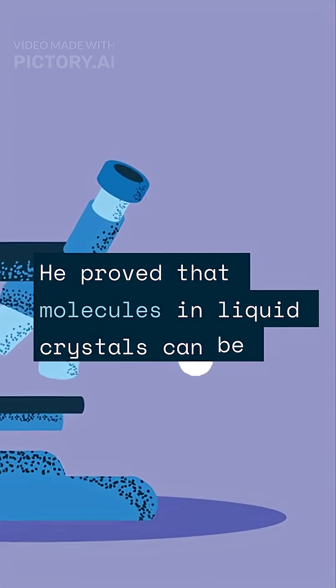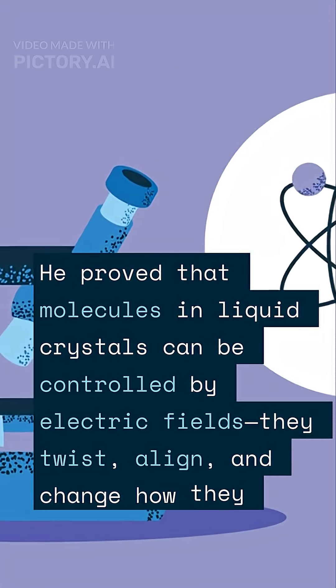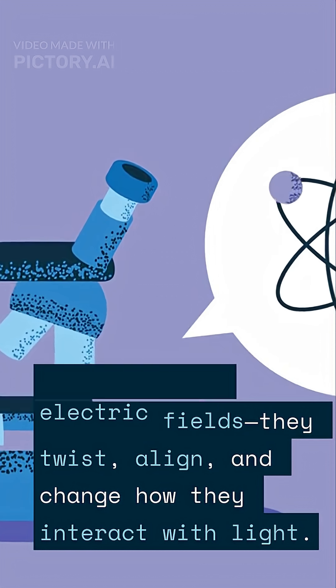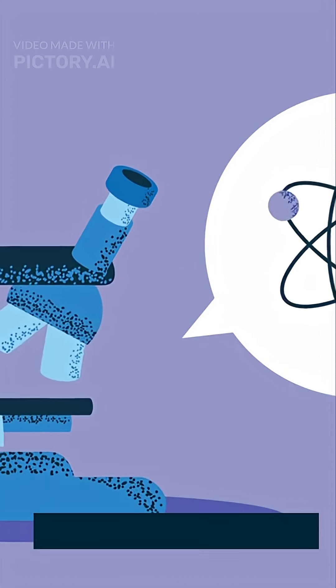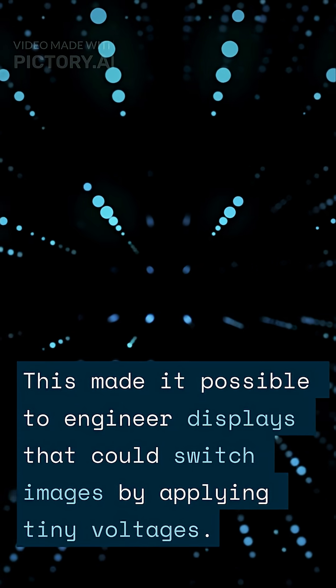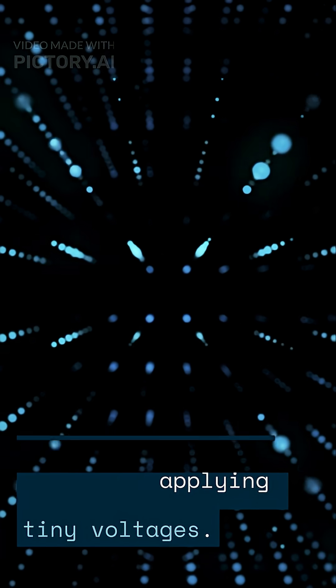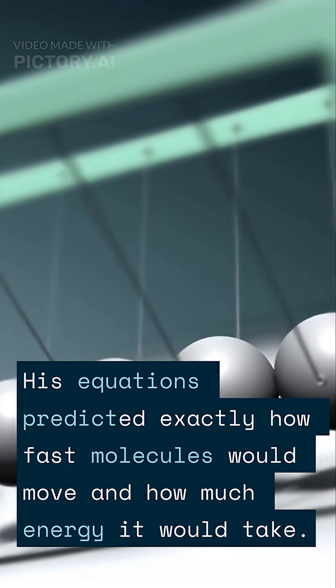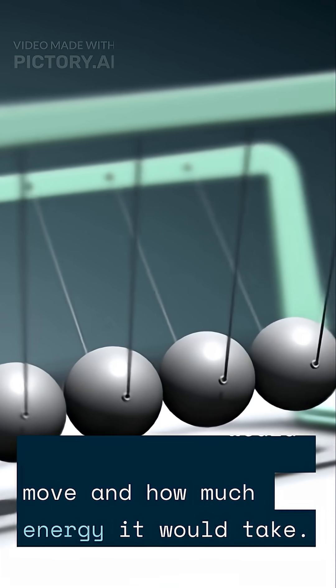He proved that molecules in liquid crystals can be controlled by electric fields—they twist, align, and change how they interact with light. This made it possible to engineer displays that could switch images by applying tiny voltages. His equations predicted exactly how fast molecules would move and how much energy it would take.